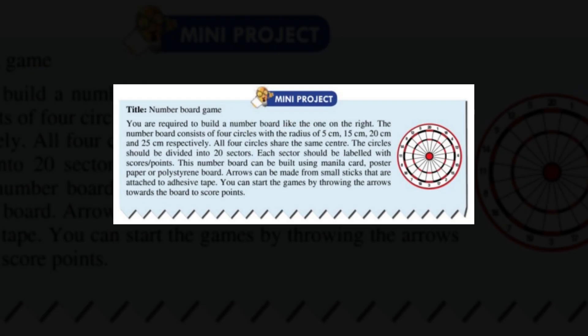My name is Noor Idina Batrisha from Tri Kedah. As you can see, my aim is to build a number board consists of 4 circles with radius of 5 cm, 15 cm, 20 cm and 25 cm.